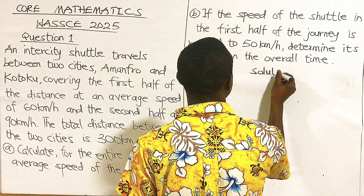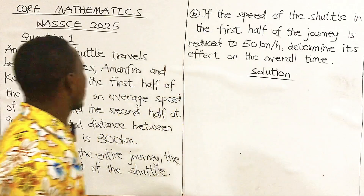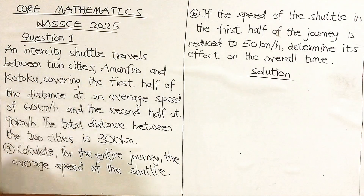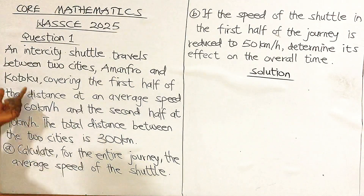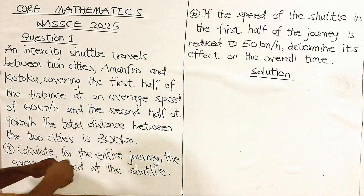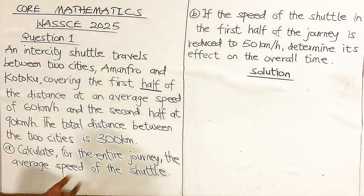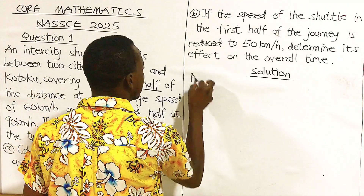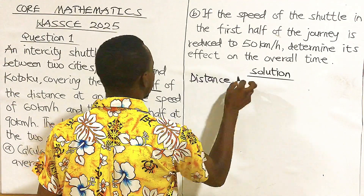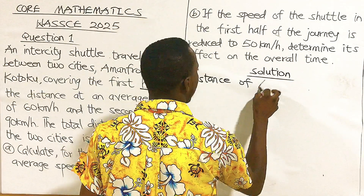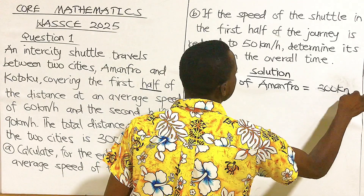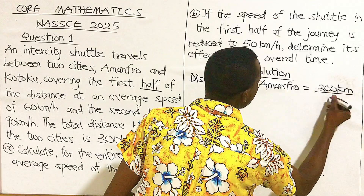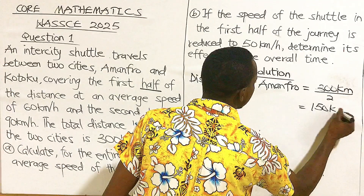Solution. From the question, we have two cities, Amanfro and Kotoku, covering the first half of the distance. Because it's the first half, that means we are going to divide the distance into two. So the distance of Amanfro is going to be 300 km divided by two, giving us 150 km.